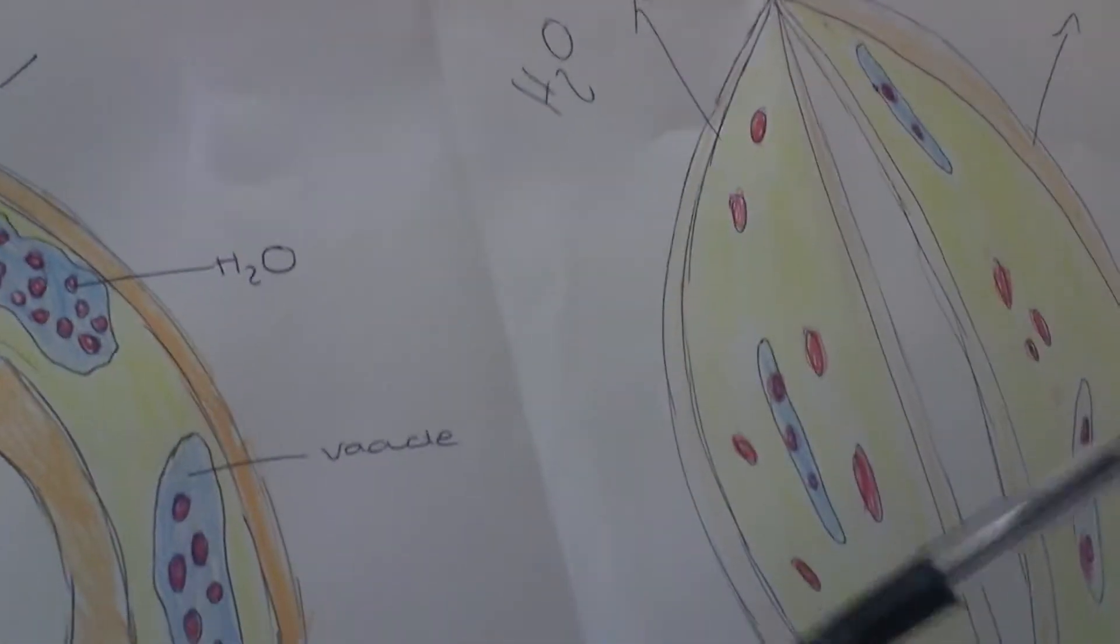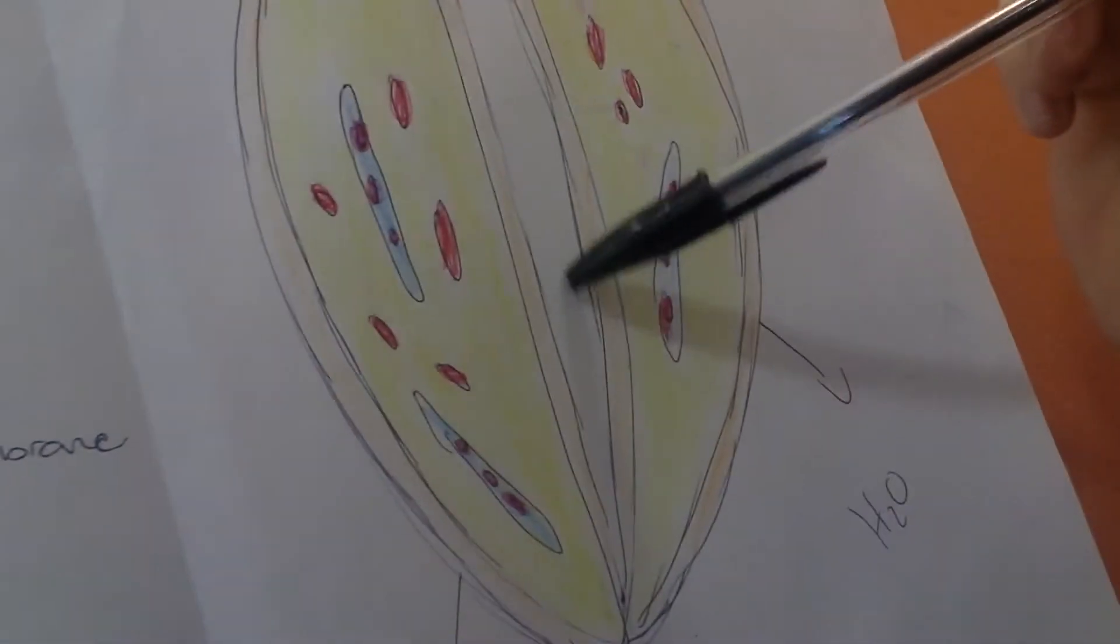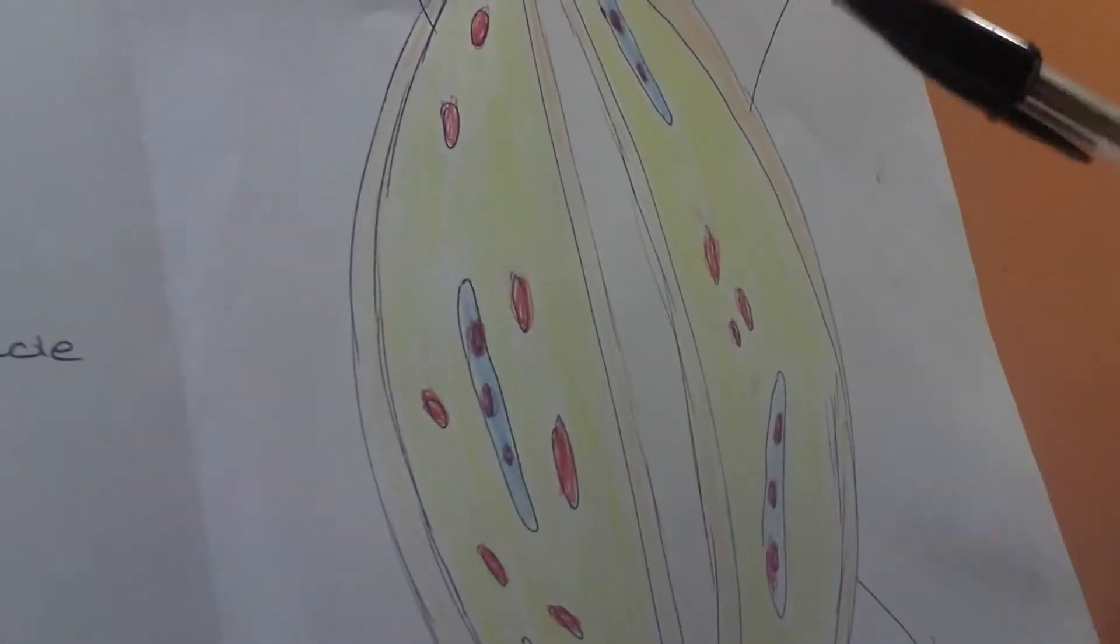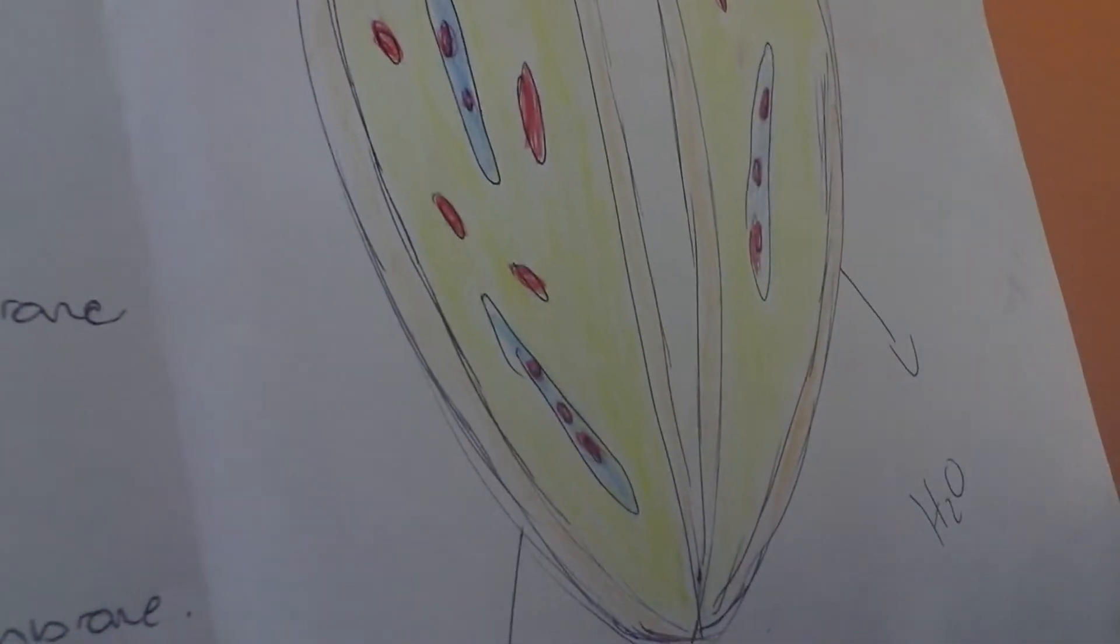Stomata close at night. Potassium ions are pumped out of the guard cells. Malate ions are converted back into starch. Both the malate ions and the potassium ions increase the water potential inside the guard cells. Water moves out of the guard cells by osmosis, down a water potential gradient.